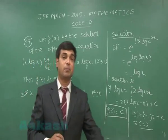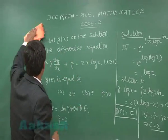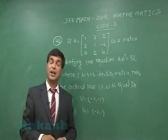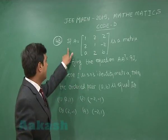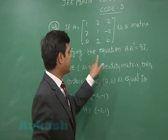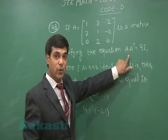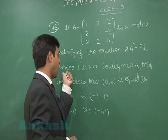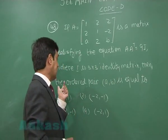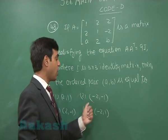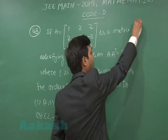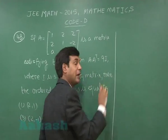Moving to the next, question number 48. A matrix A is given satisfying the equation A·A-transpose = 9I, where I is the 3×3 identity matrix. We have to find the values for the ordered pair (A, B).